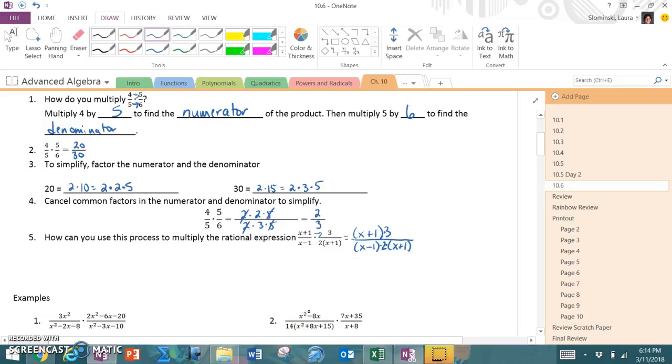But then what we looked at when we did step 4 and canceled common factors, we can now look at this and cancel any common factors on top or bottom. So I see that I have an x plus 1 on top and x plus 1 on bottom. So I'm left with 3 over 2 times x minus 1. Today, since we're actually multiplying expressions, I want you to multiply everything out in the end, which means we're going to get rid of the parentheses. And I'm left with 3 over 2x minus 2.